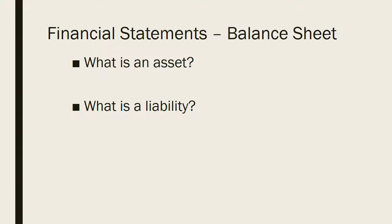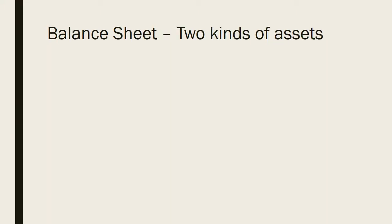The third section, equity, is whatever's left over when you subtract all of your liabilities from your assets. There are more descriptions in the links below. Within the balance sheet, we tend to classify our assets into two different categories. The first is current assets.